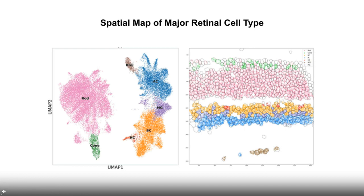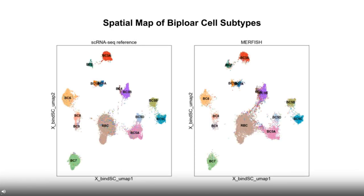Using that approach, we can identify all the major cell types in the retina. Based on the MERFISH transcript profile shown in the UMAP, we are able to identify all the cell types we know in the retina, including some rare ones such as horizontal cells and RGCs. Projecting the cell labels back to the tissue, we see the outer nuclear layer has primarily rods with some cones on top, the inner nuclear layer shows bipolar cells in the top half sprinkled with horizontal cells, Müller cells in the middle, and amacrine cells at the bottom, with RGCs at the RGC layer — consistent with what we know about the retina.